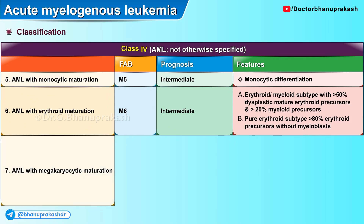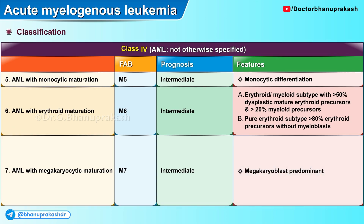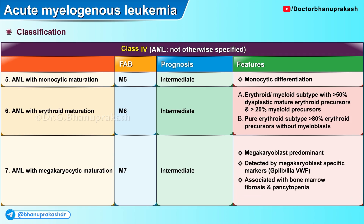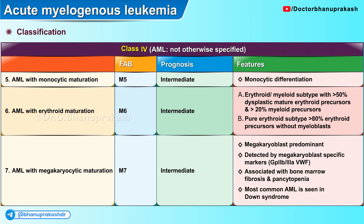The seventh and last variant is AML with megakaryocytic maturation, classified as the M7 subtype of the FAB system. Megakaryoblasts predominate and are detected by megakaryoblast-specific markers like glycoprotein 2b/3a and von Willebrand factor. They are associated with bone marrow fibrosis and pancytopenia, and this is the most common variant of AML seen in patients with Down syndrome.